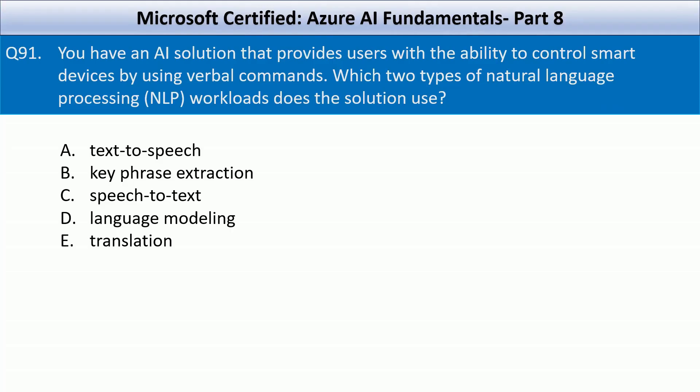You have an AI solution that provides users with the ability to control smart devices by using verbal commands. Which two types of natural language processing workloads does the solution use? Your options are text to speech, key phrase extraction, speech to text, language modeling, translation.